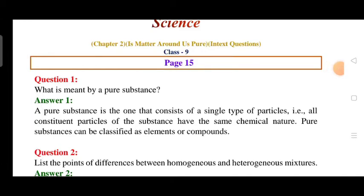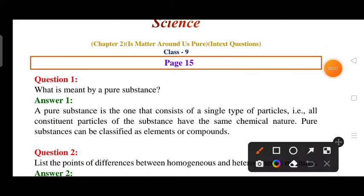Hello students, let's start solving in-text question answers for Chapter 2, whose name is 'Is Matter Around Us Pure.' Let's start discussing the page number 15 question answers. Our first question is: what is meant by pure substance? A pure substance is one in which only one kind of particles is present.